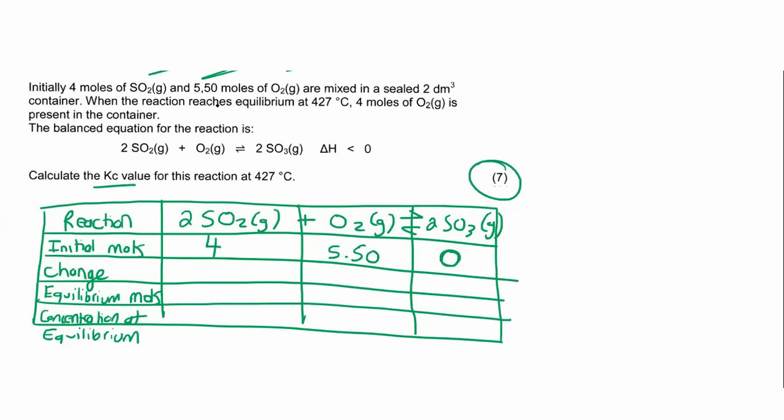When the reaction reaches equilibrium, four moles of oxygen is in the container. It makes sense that it started as 5.5 and then it has gone down, and now it is four. It goes down because it is a reactant. So how much did it change? It changed by negative 1.50, because it went from 5.50 minus 1.50, and that gives us four.